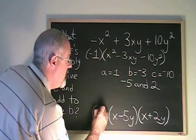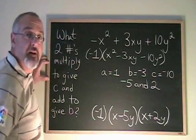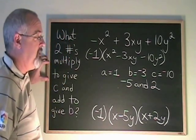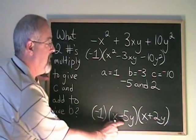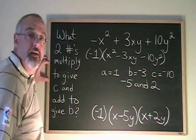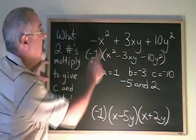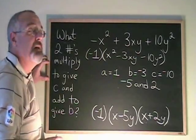I have to write all of the factors when I give my answer at the bottom. If I multiply these three expressions together, I will get -x² + 3xy + 10y².